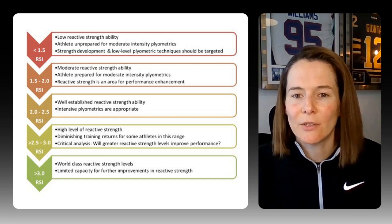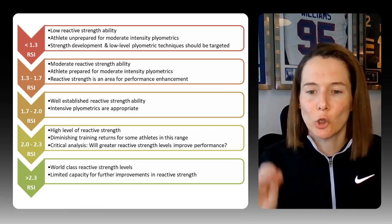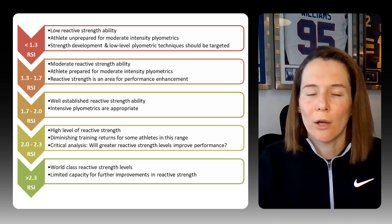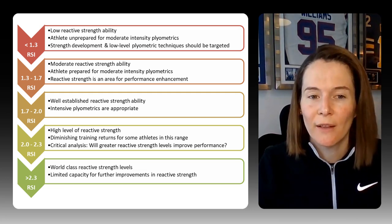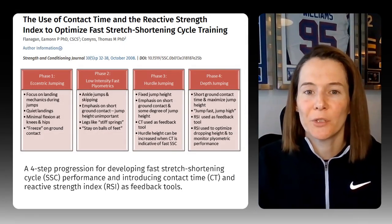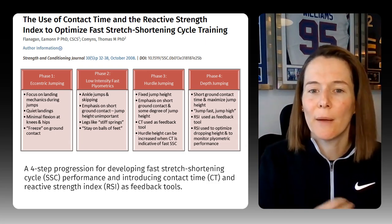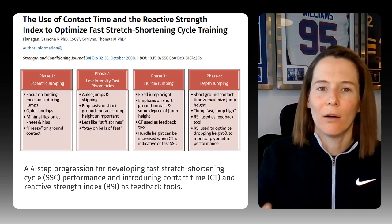Here we also have the updated normative data for female athletes, again using the jump height to ground contact time formula — a mixture of practical experience and published data from Eamon Flanagan. In this case, world-class reactive strength level is greater than 2.3, with the lower band being 1.3. Feel free to pause the video here to get a deeper look at this figure. In another key paper on this topic, also written by Eamon, he has provided a practical application — a four-step progression for developing fast stretch shortening cycle training based on the RSI, guiding what phase of plyometric training you want your athlete to work through based on their assessed reactive strength capabilities.